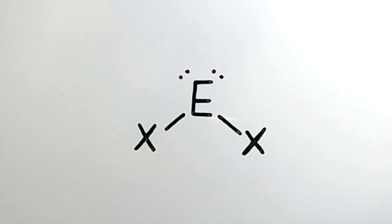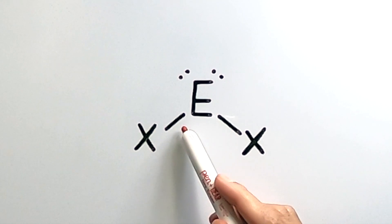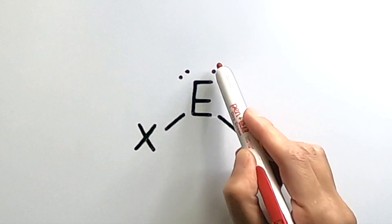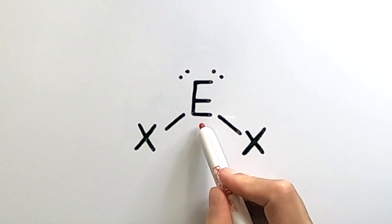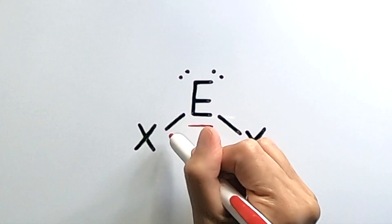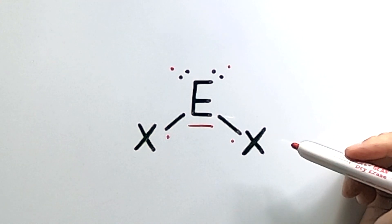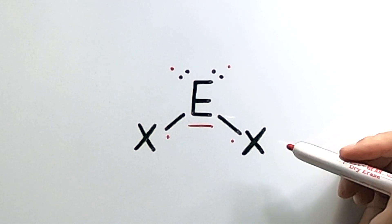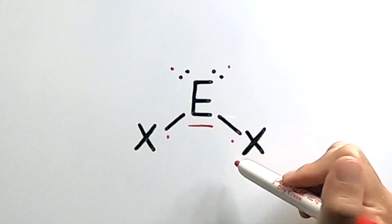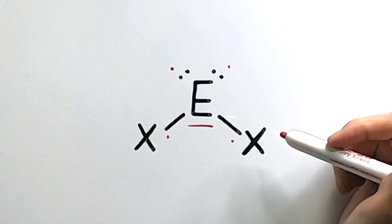One more thing you have to know before we get into the trick for hybridization: when we're looking at electron domain regions, that refers to any bond regions or lone pair regions of the central atom. So the central atom here has four electron domain regions — two of which are bond electrons and two of which are lone pairs.